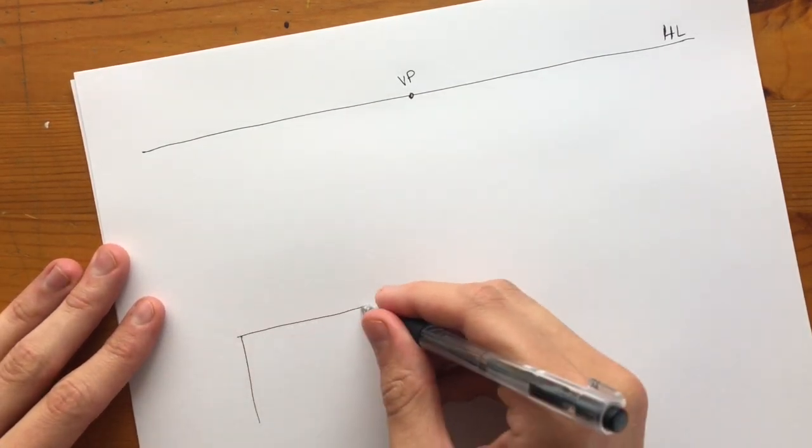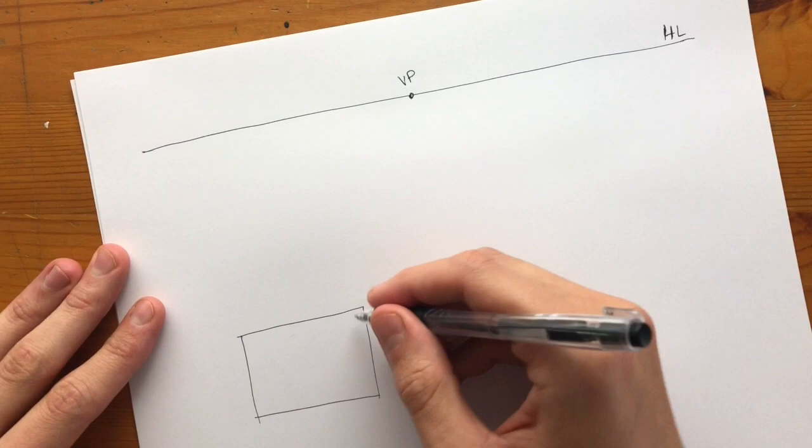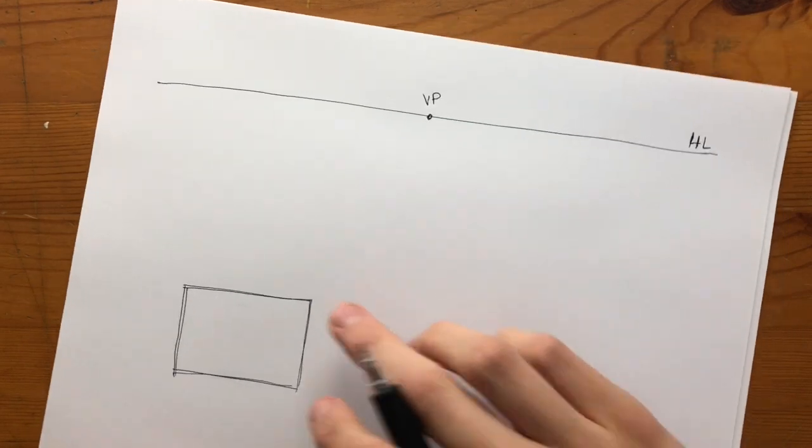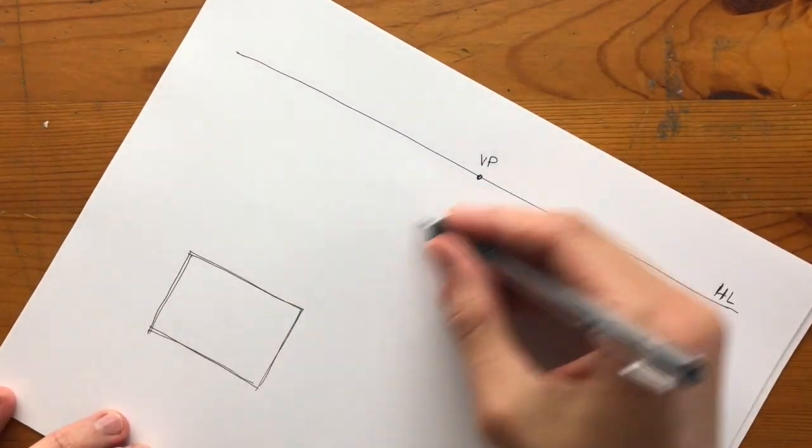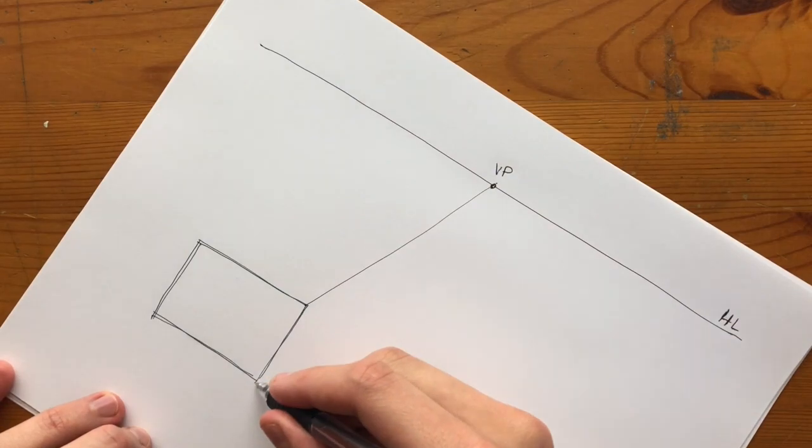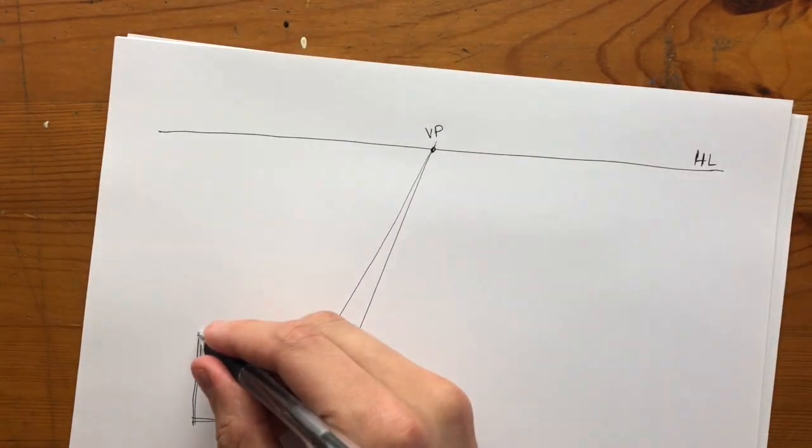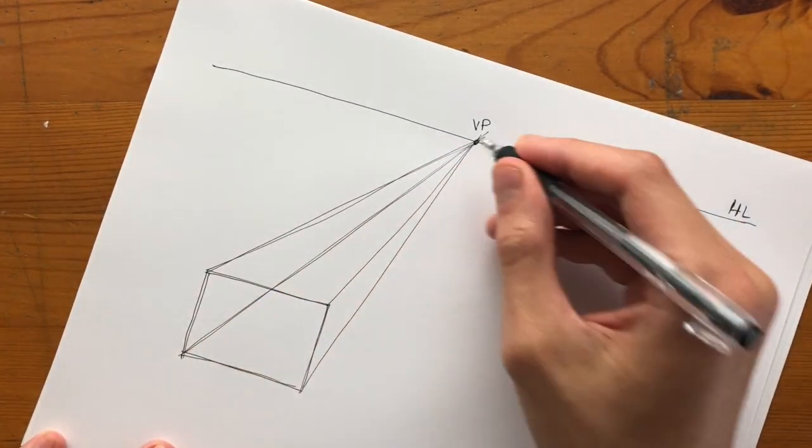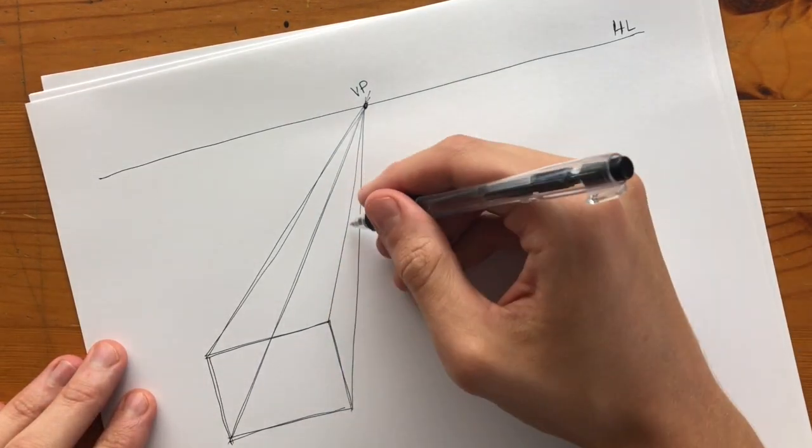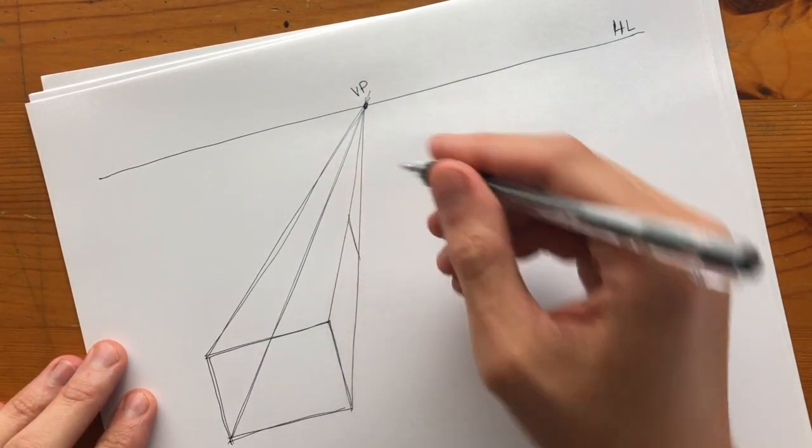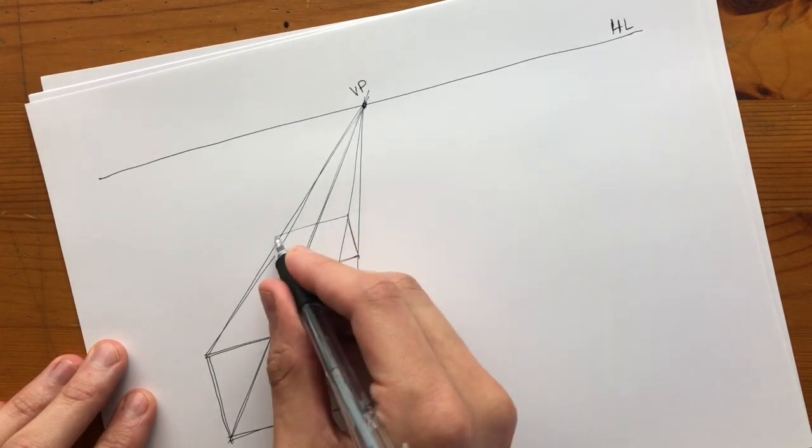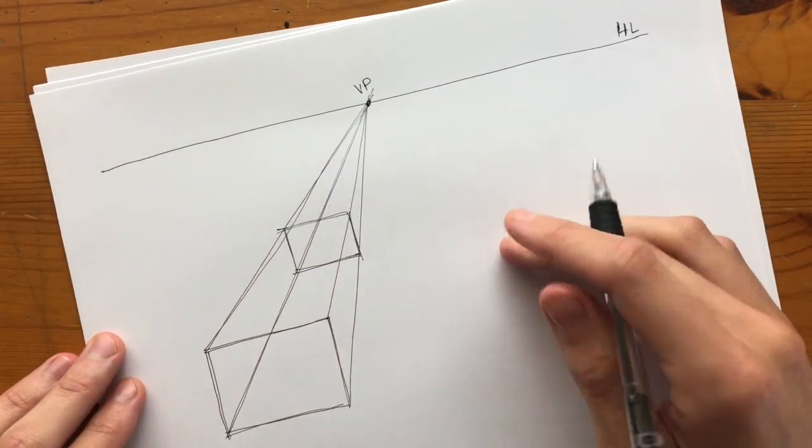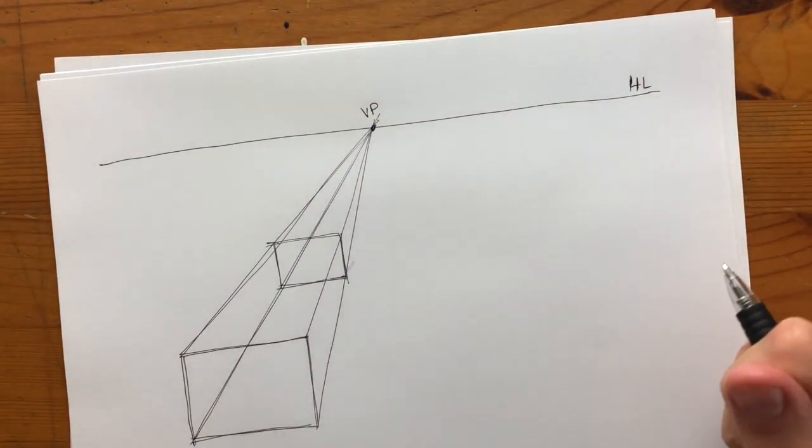Now draw a rectangle somewhere in the distance here, and what we're going to do is connect each of the corners towards the vanishing point. Now I make another rectangle in between these new points. And now we have a rectangle drawn in one-point perspective.